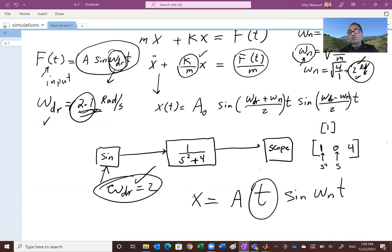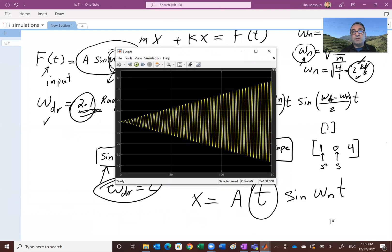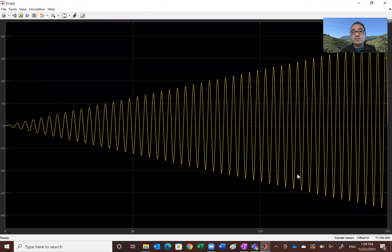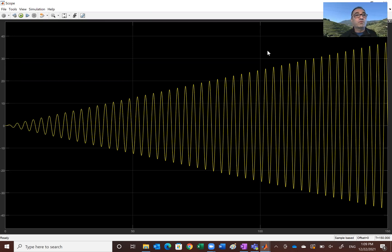But the amplitude, as you saw in this picture, in the scope, is going to increase as the time increases. So this is only 150 seconds. And the amplitude has reached almost, look, almost 40. And imagine if you run this over five minutes or so. It's going to be really, really crazy.